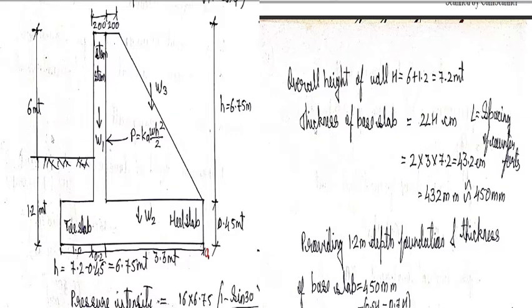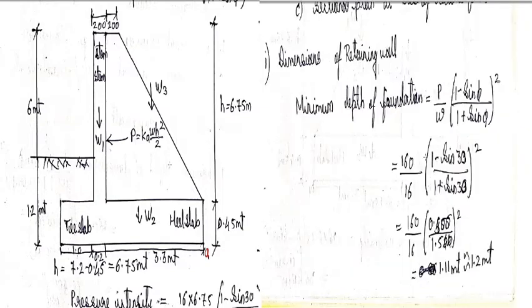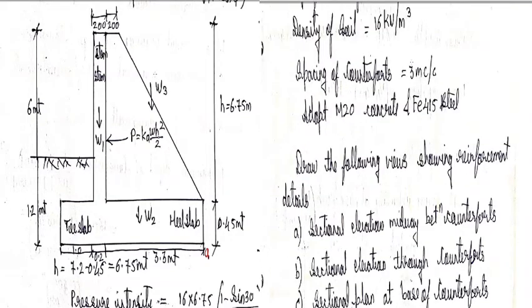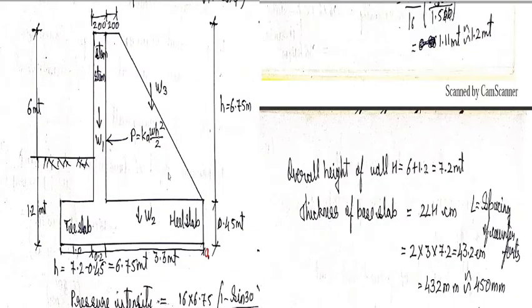Now next is thickness of base slab. Now this is given as 2L into H in terms of centimeter where L is spacing of counterforts. So whenever you have a counterfort design it changes so it will become 2L into H in terms of centimeter. So 2 into L, length is 3 meter center to center, and H is nothing but 7.2.